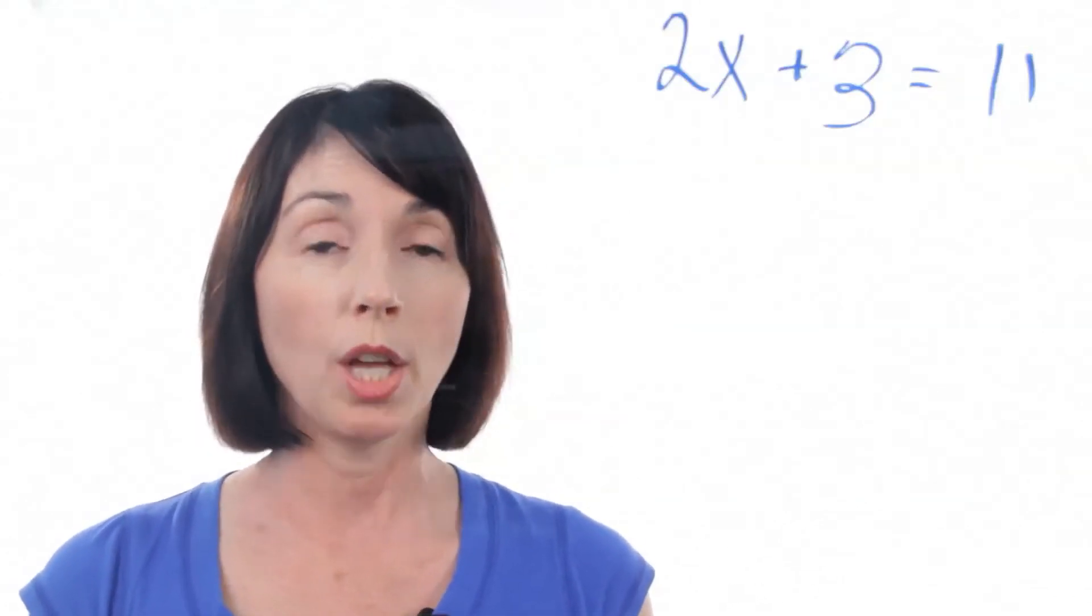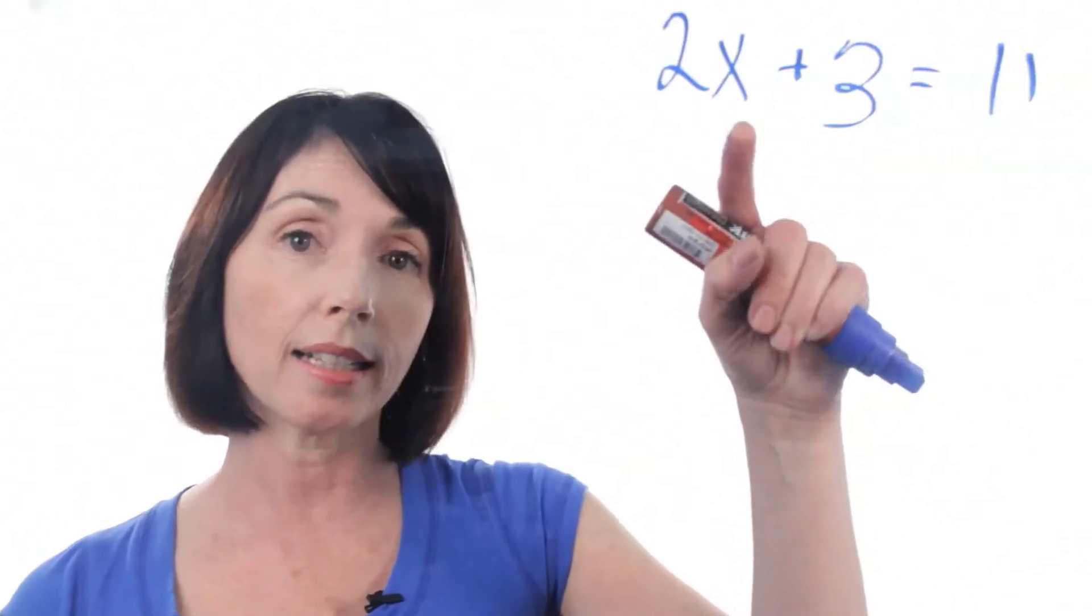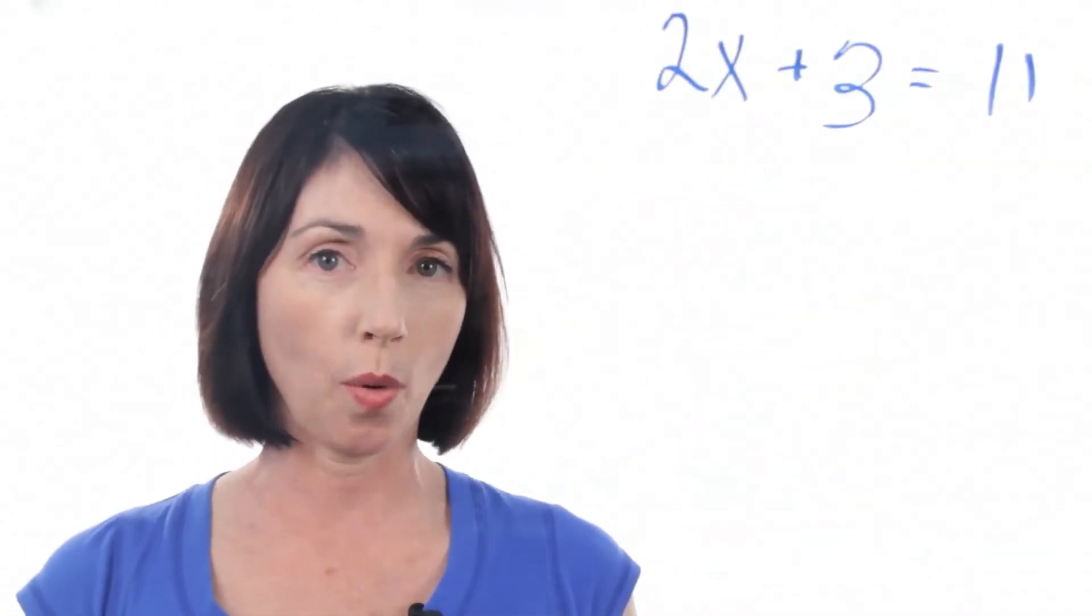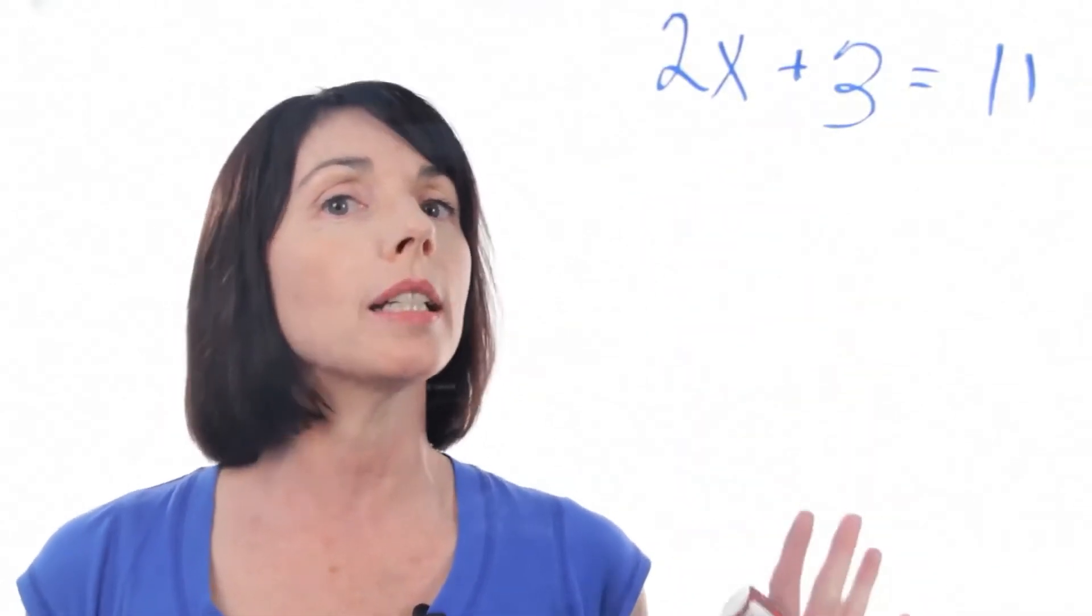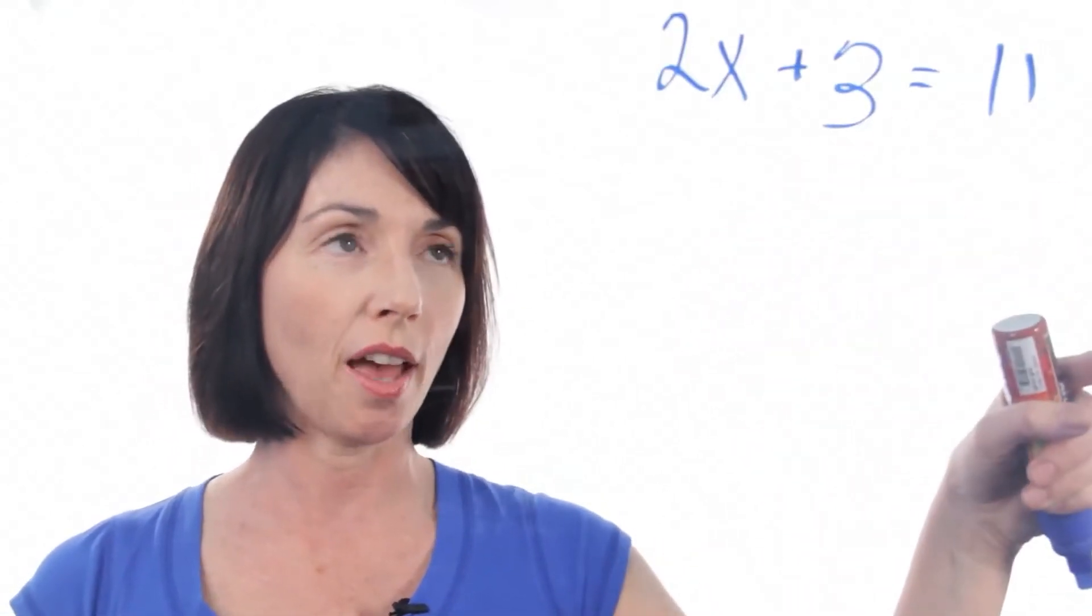Remember the objective is always the same. You want to get the variable, which is x, by itself on one side of the equation. And the equation is balanced, so whatever you do to one side you have to do to the other.